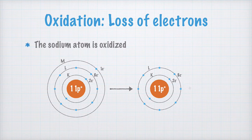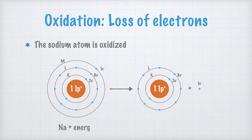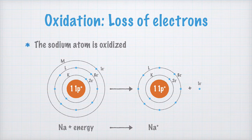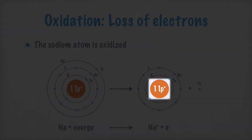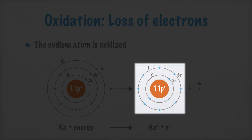I'll return to noble gases in a later video. We also get a free electron here. We write that we start with a sodium atom and add enough energy that the valence electron is completely removed. Then we get a sodium ion, written Na+, because it still has 11 positively charged protons but only 10 negatively charged electrons, giving it a total charge of +1.